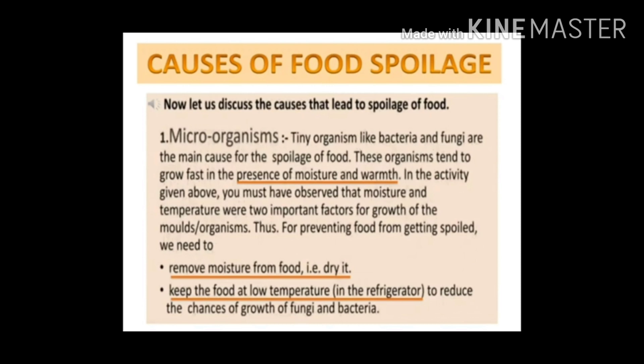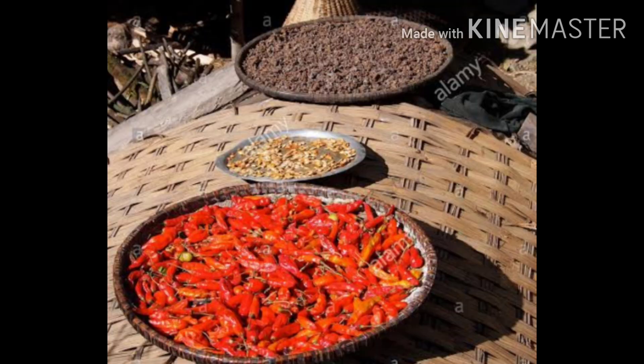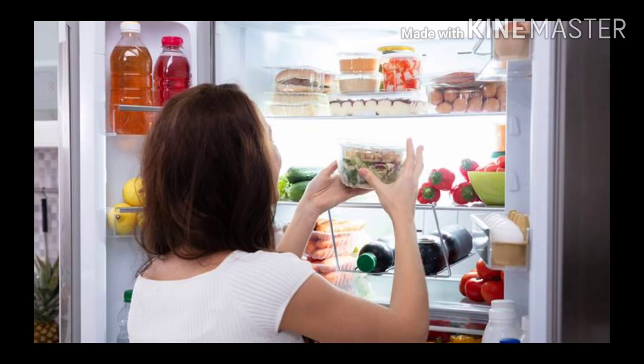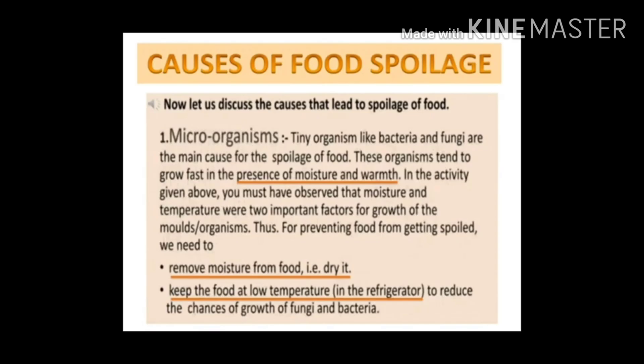If we want to prevent our food items from spoiling, we can dry them — we can remove the moisture from food. We can also keep the food at low temperature, meaning we can keep it in the fridge, to reduce the chance of growth of fungi and bacteria.